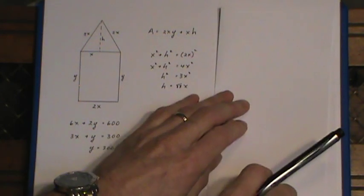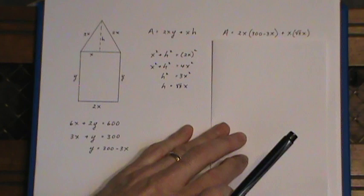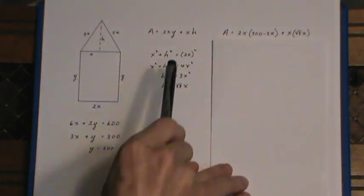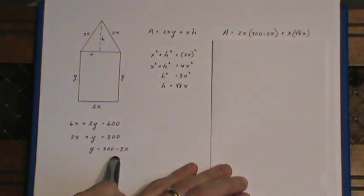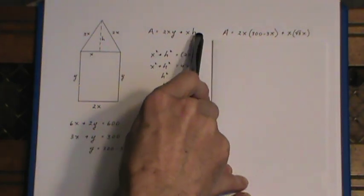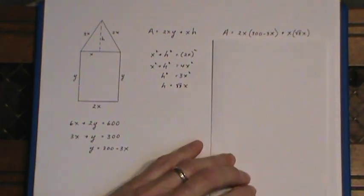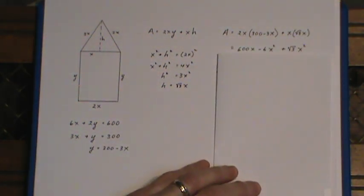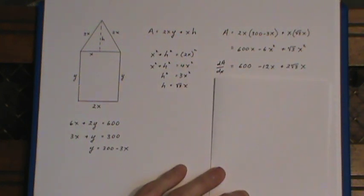Now, when I go to substitute these in, I'm putting in, for the y, the 300 minus 3x, and for the h, I'm putting in the root 3x. I multiply that out, and then I take the derivative.